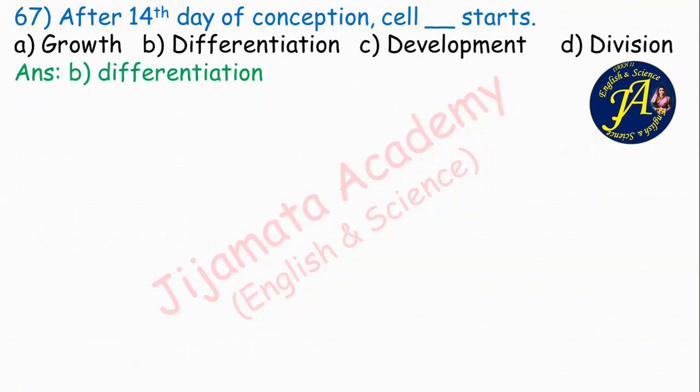From the 14th day after conception, cell differentiation begins — meaning cells start dividing into different organs like tooth, heart tissue, and other specific tissues and organs.